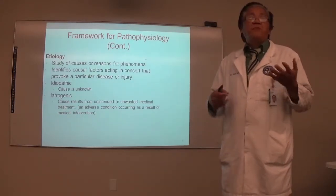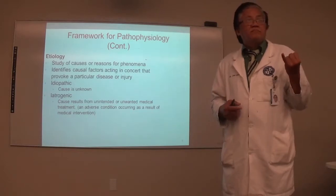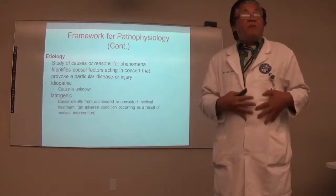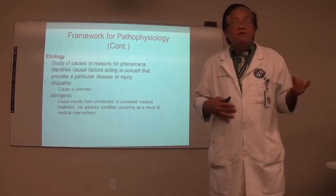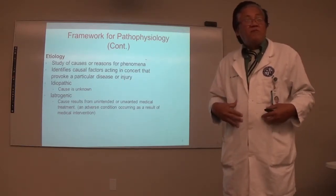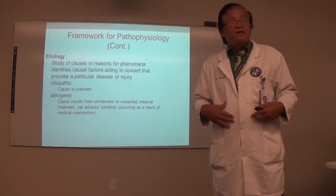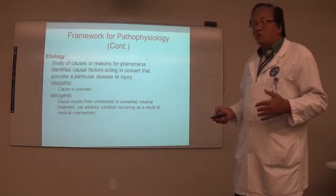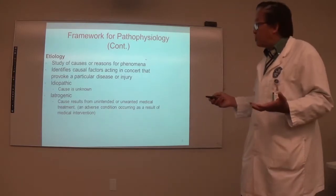When you have peritonitis, the most important signs and symptoms include: number one, generalized abdominal pain — not localized, but generalized. Second, board-like rigidity, meaning the abdominal wall becomes rigid because the peritoneal membrane is inflamed. These are unintended complications — not something you wanted to happen. That is what iatrogenic means.